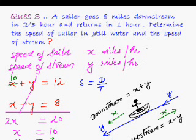The speed of the sailor in still water is 10 miles per hour. And the speed of the stream is 2 miles per hour.